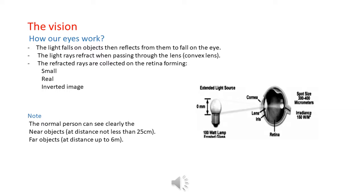How our eyes work: light falls on objects, then reflects from them to fall on the eyes. The light rays refract when passing through the convex lens of the eye. The refracted rays are collected on the retina, forming a small, real, and inverted image. A normal person can see clearly a near object at a distance not less than 25 cm, and a far object at a distance up to 6 m.